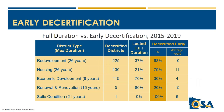Early decertification is quite common. Most TIF districts do not run their full duration. From 2015 to 2019, 63 percent of redevelopment districts decertified early, as did 79 percent of housing districts — on average by 10 to 11 years. Even economic development districts with shorter durations decertified early 30 percent of the time. Some of this may be due to projects not getting off the ground, authorities ending districts when costs are paid, or the six-year rule requirement.